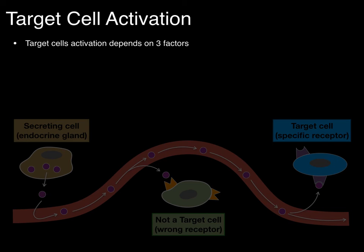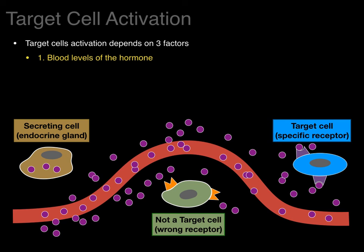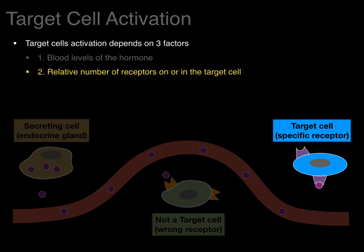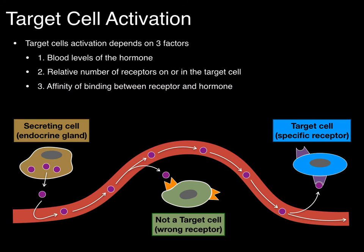Target cell activation depends on three factors. Number one, the blood levels of the hormone — few hormones means little activation, lots of hormones means a lot of activation. These levels vary only a little bit because of the negative feedback mechanism, but the concept is the more hormones are in the blood, the more activation of effector tissues you get. Second, the relative number of receptors on or in the target cell — a couple of receptors gives a little activation, lots of receptors gives a lot of activation. And finally, the affinity of binding between the receptor and hormone also factors into the activation of those effector tissues.